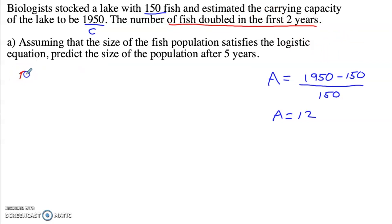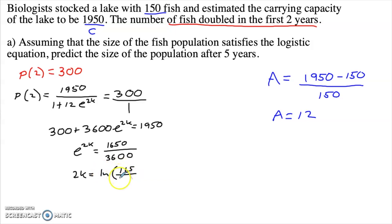Once we have that value for a, we'll look for the initial condition. Population at year two is double the initial. So that would be double 150 or 300. And we'll simply now plug in with that initial condition to find our k. So p of 2 would be 1950, that carrying capacity over 1 plus 12, that a, e^(2k), because this is the second year, equals 300. We get 300 plus 3,600 e^(2k) equals 1950, which gives us e^(2k) equals 1650 over 3,600. 2k is then the natural log of 165 over 360. One half of that is our k, which is approximately negative 0.3900792788. And again, we want to use all of those decimal places.